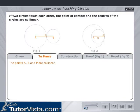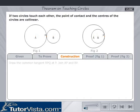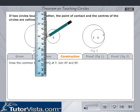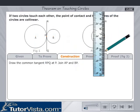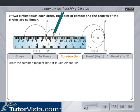The points A, B and P are collinear. Construction: Draw the common tangent RPQ at P. Join AP and BP.